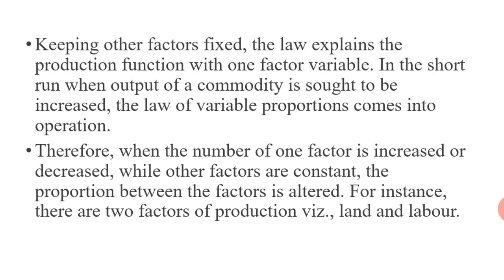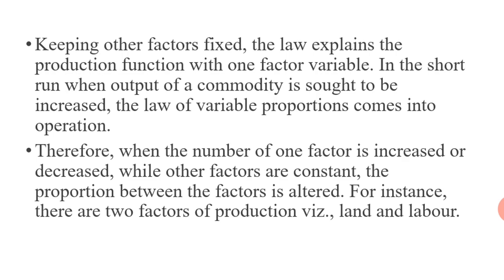Next class, you are going to study with the graph and table. It explains the relationship between total product, marginal product, and average product by taking one factor — labor — which is variable in nature. We take one factor, labor, and study the relationship between total product, marginal product, and average product. Thank you, students.